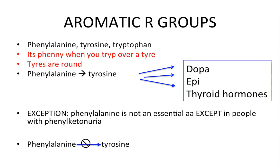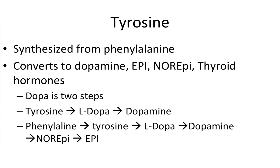On to the aromatic R groups: phenylalanine, tyrosine, and tryptophan — remember, it's funny when you trip over a tire, and tires are round. Phenylalanine is a precursor to tyrosine, which is a precursor to dopamine, epinephrine, and thyroid hormones. Phenylalanine is non-essential except in people with phenylketonuria. Tyrosine is synthesized from phenylalanine and converts to dopamine (via L-DOPA), then to norepinephrine and epinephrine, and also to thyroid hormones. The synthesis flow is: phenylalanine → tyrosine → L-DOPA → DOPA → norepinephrine → epinephrine.